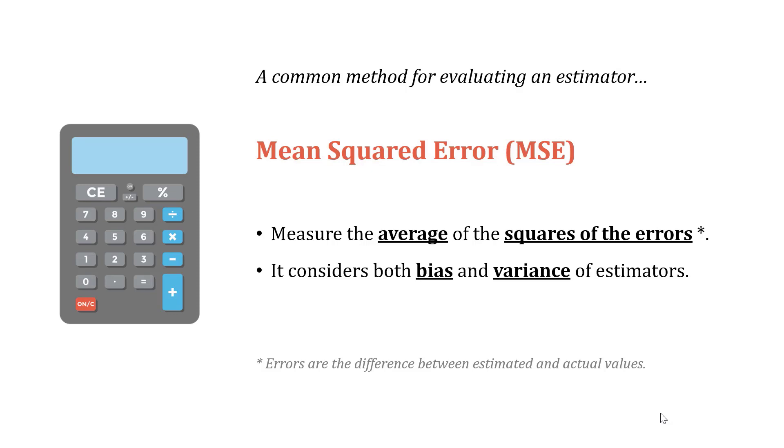Bias and variance, which we just talked about briefly a moment ago, are going to be very important when you talk more about machine learning. These come up again and again. This measure, the mean squared error, considers both of these things.